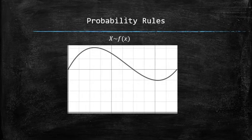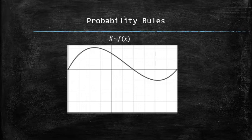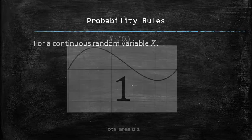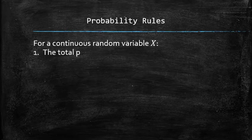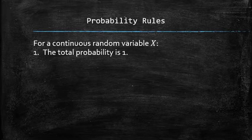By the definition of the probability density curve, the total area under the curve is equal to 1, and since the area is associated with the probability, we have the first rule. The first probability rule states that the total probability is 1.